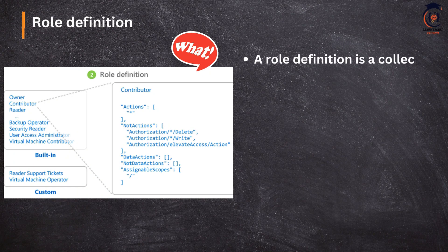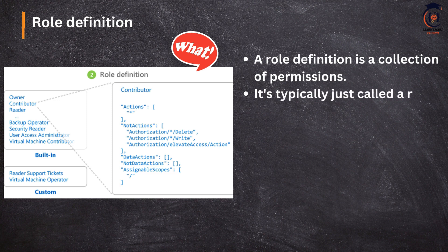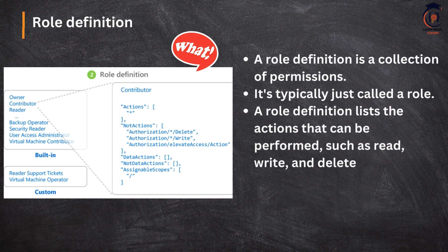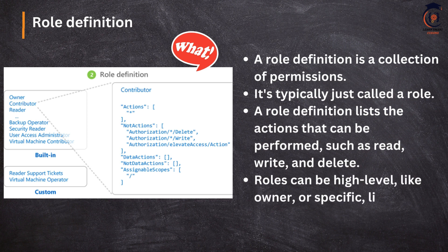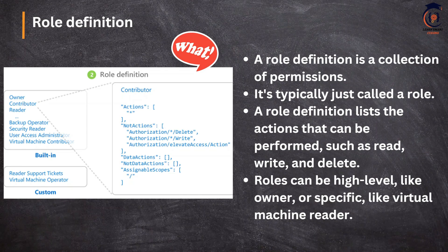The second element is the role definition — think of this as 'what.' Role definition includes built-in roles like owner, contributor, reader, etc., and you can also create custom roles. If you look at the definition of a role, you will see these properties: action, not action, data action, not data action, and assignable scope. Basically, it has a definition of what you have access to and what you don't — that is what comes under action, not action, data action, and not data action. Assignable scope maps to the third element, which is 'where.'